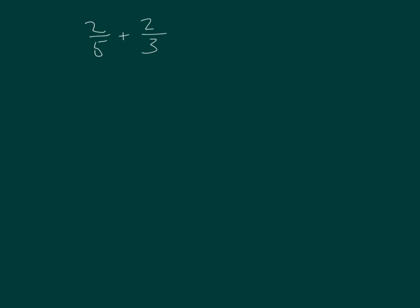Here we have two fifths plus two thirds. The numerators are the same, both being two, but the denominators are different. We still work and find a common denominator to be able to solve this problem.